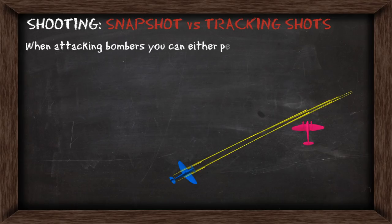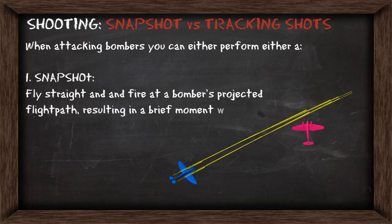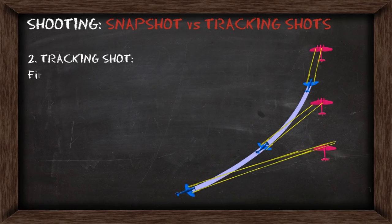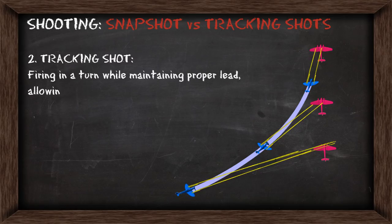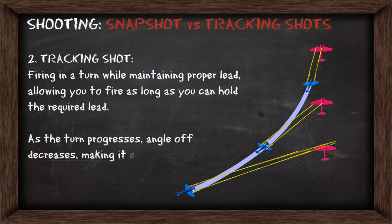When attacking targets, you're going to either perform a snapshot or a tracking shot. In a snapshot, you're going to be flying straight and firing at the bomber's projected flight path, which will result in a brief moment where your rounds will hit. A tracking shot is when you're firing while in a turn and maintaining the proper lead. This allows you to fire as long as you can hold the required lead, so as the turn progresses the angle off decreases, making it easy to shoot and be shot at by the gunners.